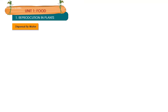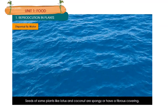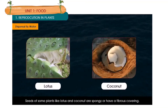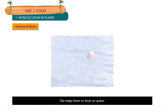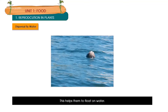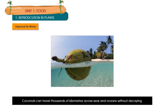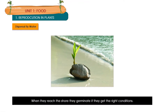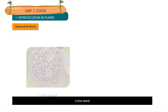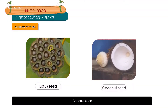Dispersal by water: Seeds of some plants like lotus and coconut are spongy or have a fibrous covering, which helps them float on water. Coconuts are carried away by water and can travel thousands of kilometers across seas and oceans without decaying. When they reach the shore, they germinate if they get the right conditions. Examples include lotus seed and coconut seed.